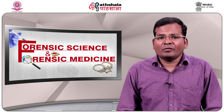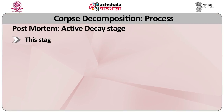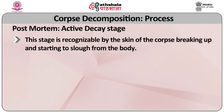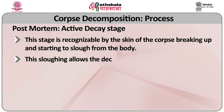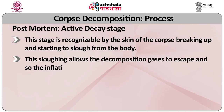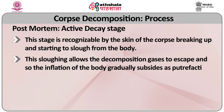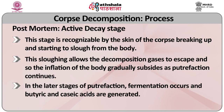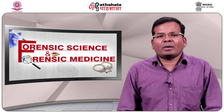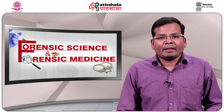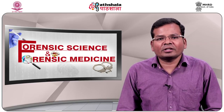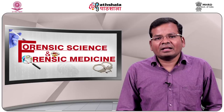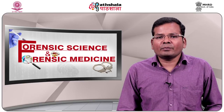Stage 3 is the active decay stage. This stage is recognizable by the skin of the corpse breaking up and starting to slough from the body. The sloughing allows decomposition gases to escape and shows that infiltration of the body gradually subsides as putrefaction continues. In the later stage of putrefaction, fermentation occurs and butyric and casein acids are generated, followed by a period of advanced putrefaction including ammoniacal fermentation, to which different cohorts of insects are attracted, including silphid beetles, histerids, cadaverinus, and muscid flies.